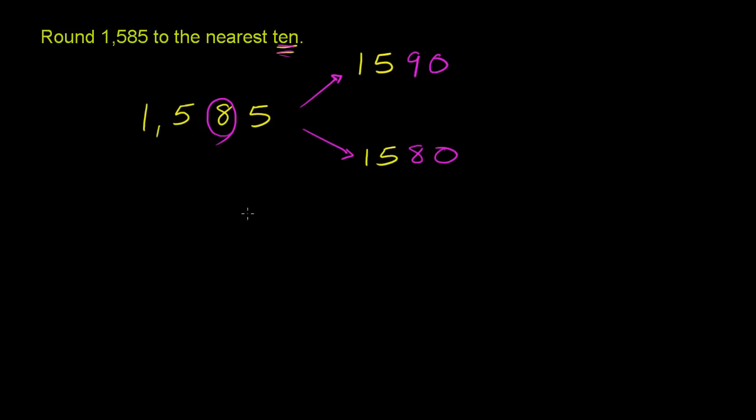Now we've seen in the last few examples: if the place to the right of it is 5 or greater, we round up. Well, the place to the right of it is definitely 5 or greater—it is 5. So we round up. So it is 1,590, and we're done.